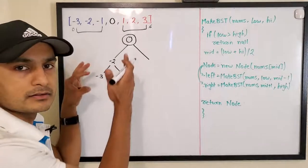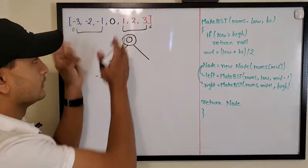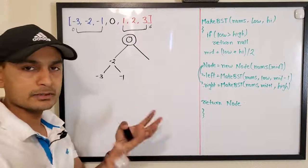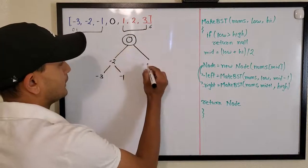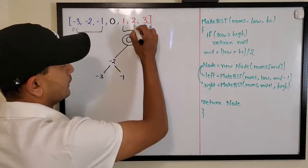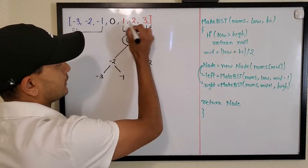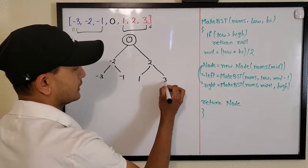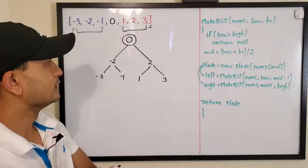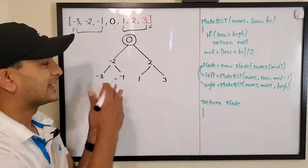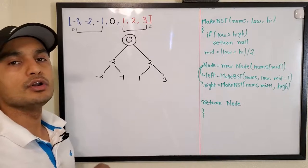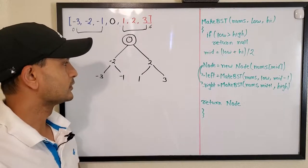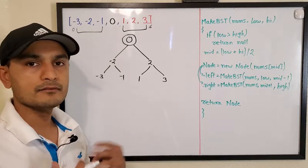The left part is done. Now for the right part, we follow the same process — take the middle element, which is two, as the root. This gives us one as the left child and three as the right child. There we have our binary search tree, which is also height-balanced. That's the simple process to build a BST from a sorted array.